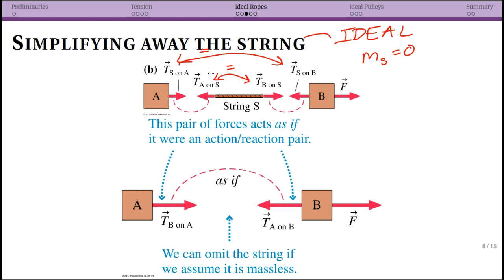Because the string is ideal — mass equals zero — the tension of A on the string and B on the string are equal. That means all four forces form two Newton's third law pairs that are all equal in magnitude. This lets us simplify away what's happening with the string entirely: we take the two masses at each end and treat them as if they are directly interacting with each other, even though they are actually interacting through the string.